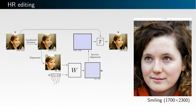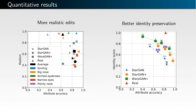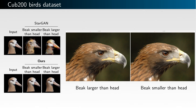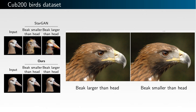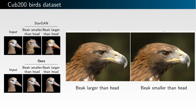We demonstrate image editing of very high resolutions; this only requires a single forward pass of our network using a low resolution image. We also show that our edits are more realistic and better preserve the subject's identity. The robustness of this approach is demonstrated by showing plausible image editing results on the CUB200 birds dataset — to our knowledge this has not been previously accomplished due to the challenging nature of the dataset.